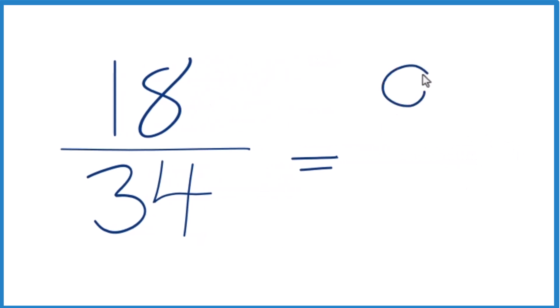18 divided by 2 is 9, and 34 divided by 2 is 17. So when we simplify the fraction 18/34, we end up with 9/17.